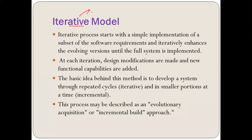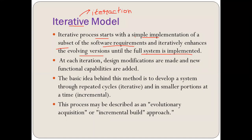The iterative model takes its name from iteration. As the name suggests, iteration means a loop — working on certain steps again and again until a specific condition is reached. So the iterative process starts with a simple implementation of a subset of software requirements and iteratively enhances the evolving versions until the full system is implemented. The project is taken up, simple implementations are done in phase one, and then enhanced iteratively until the final version is achieved.